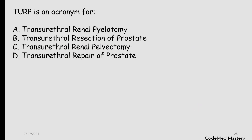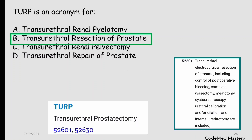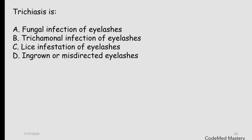Next question: TURP is an acronym for — and the right answer is option B: transurethral resection of prostate. You can find this answer by looking up TURP in the index. The TURP codes start at 52601; code 52601 is for transurethral electrosurgical resection of the prostate. Therefore, TURP means transurethral resection of prostate.